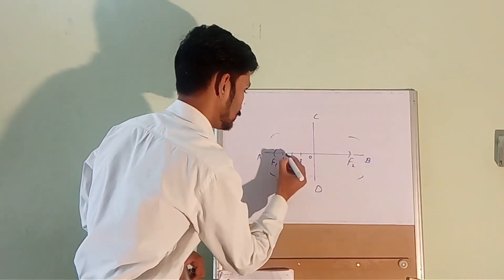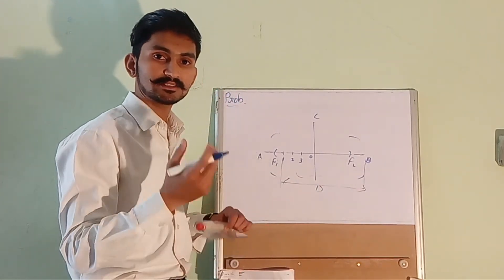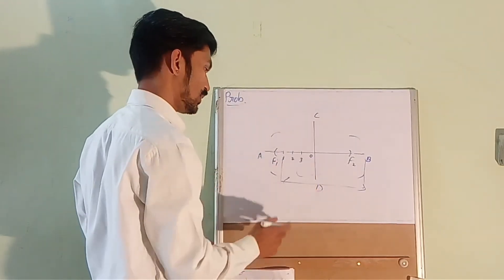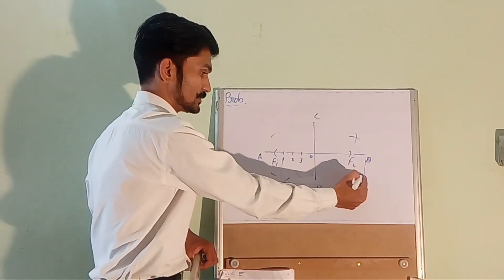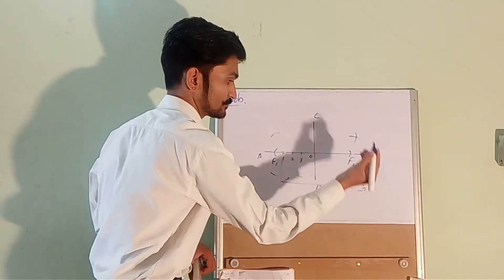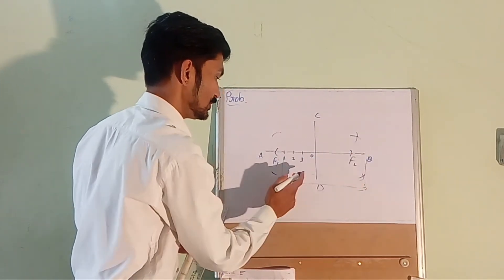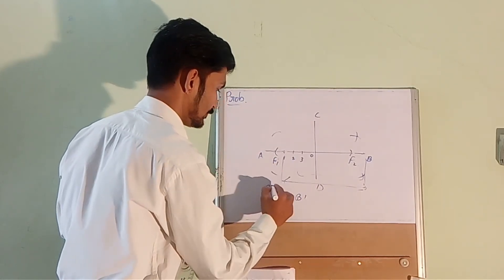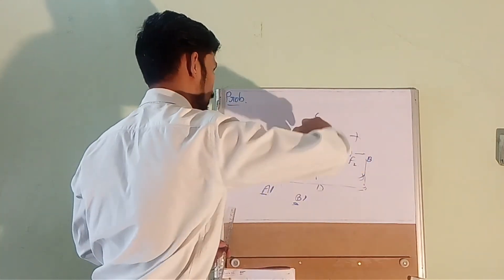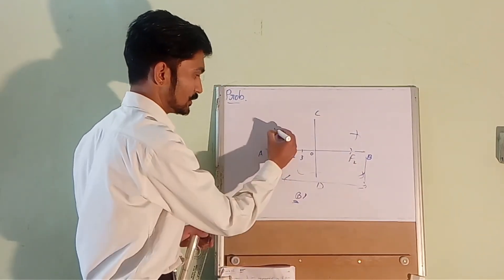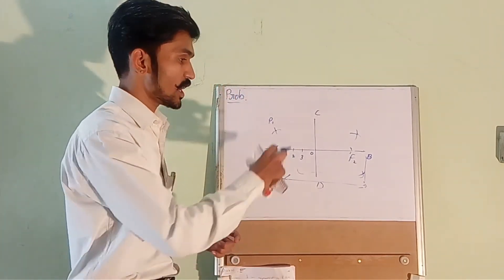Now take B to 1 as radius with centers F1 and F2 and draw another set of arcs. When you take B1 as radius and F1 as center, those arcs will intersect the previous arcs, giving two intersection points on each side — four points total. Repeat with F2 as center and the same B1 radius. These four points lie on the required ellipse.